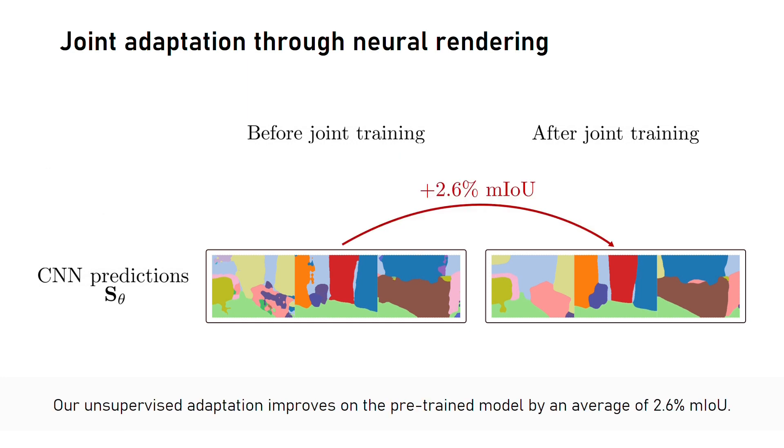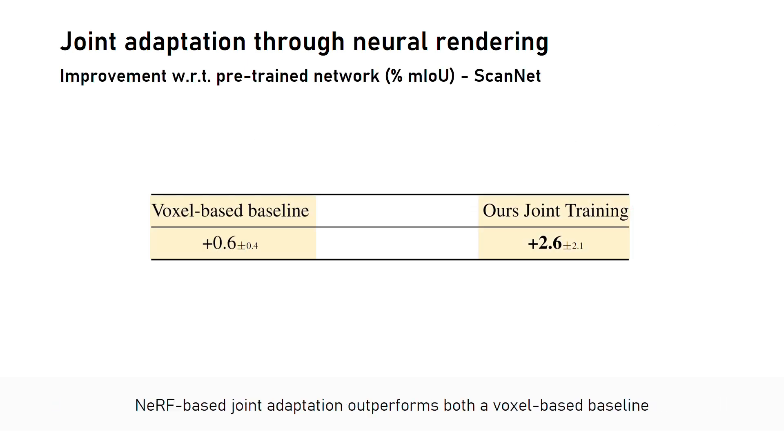Comparing the performance of the segmentation model adapted through our joint training with that of the pre-trained model, we find an average increase of performance of 2.6% in mIoU over 10 scenes from the ScanNet dataset. Our NeRF-based joint adaptation outperforms both a voxel-based baseline and simple fine-tuning with our semantic NeRF pseudolabels.